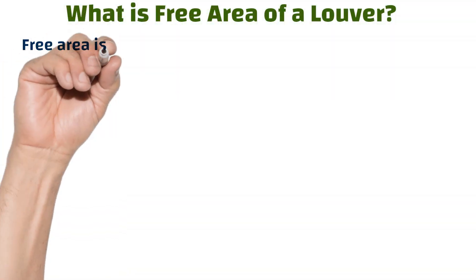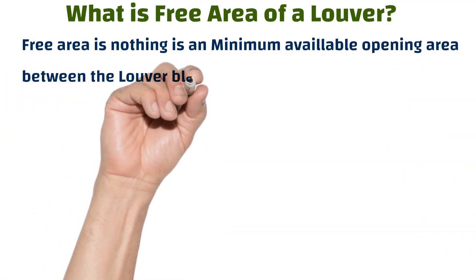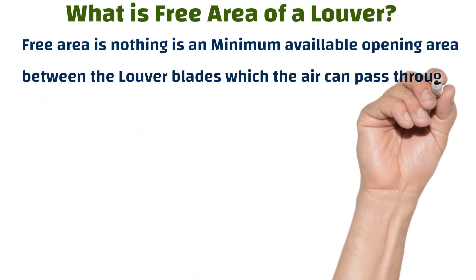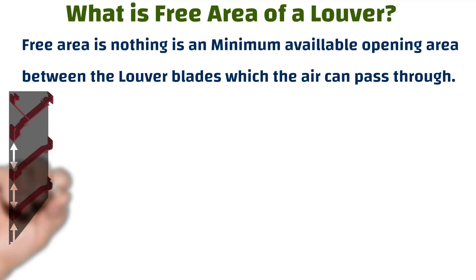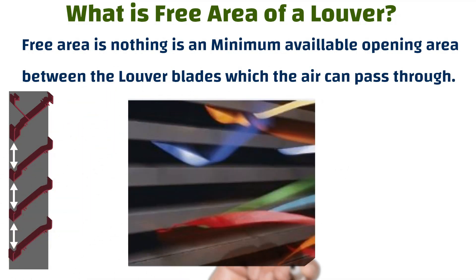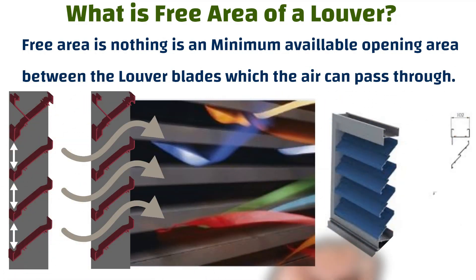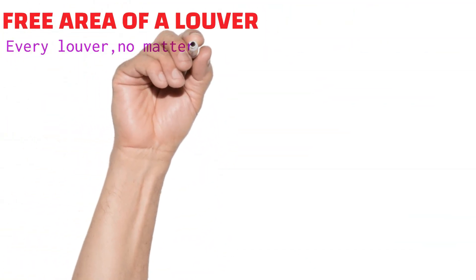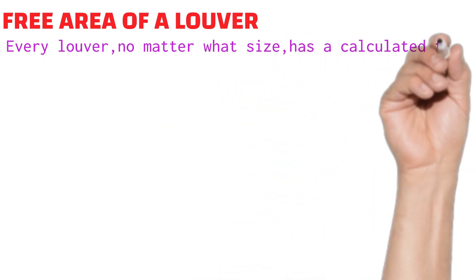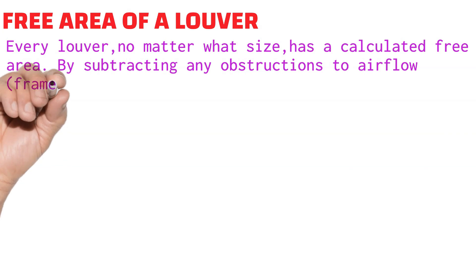What is the free area of a louver? Free area — the name itself says it — is the minimum available opening area between the louver blades through which air can pass. Every louver, no matter what size, has a calculated free area, determined by subtracting any obstructions to airflow like frames and blades from the overall opening size.